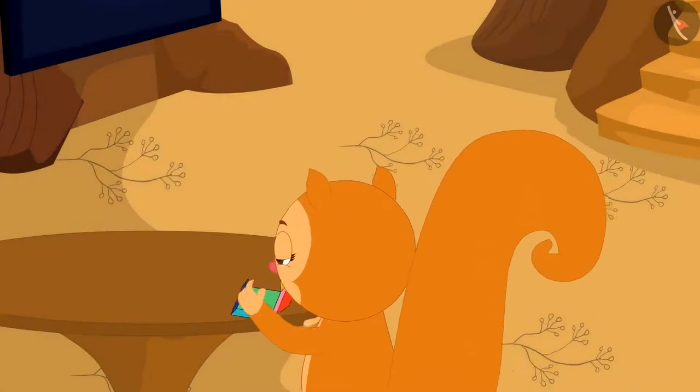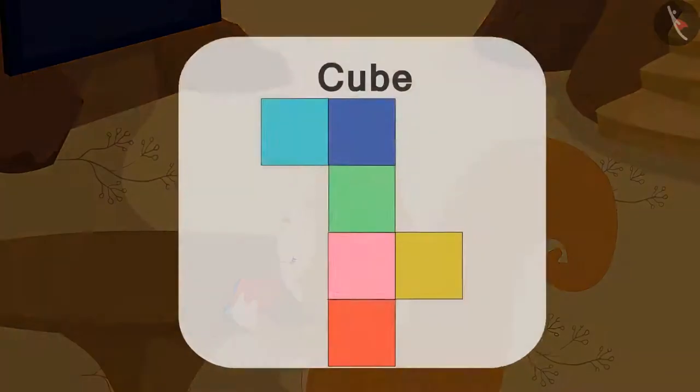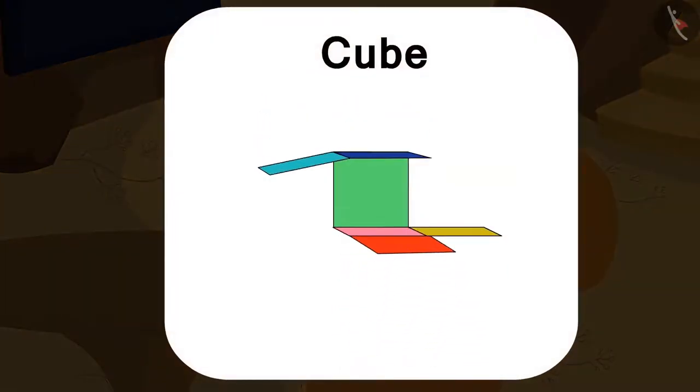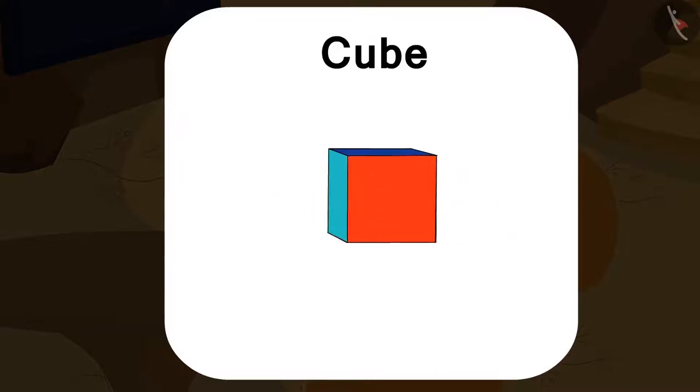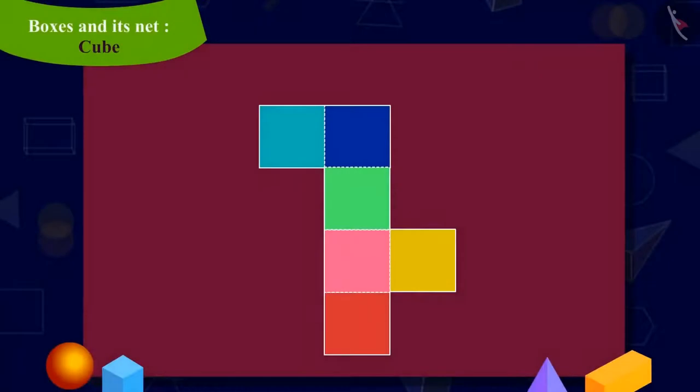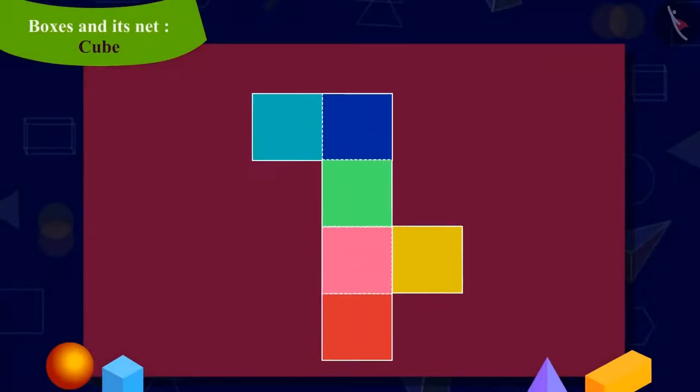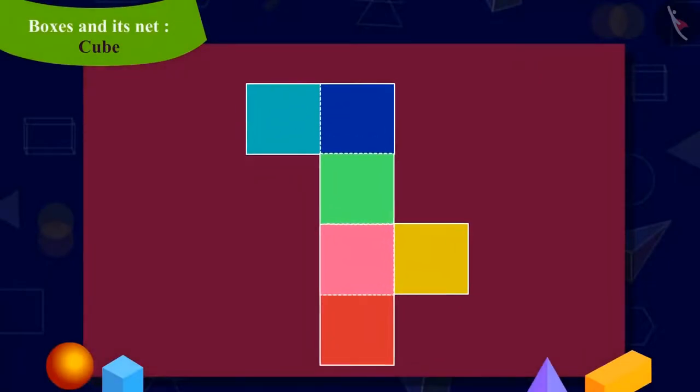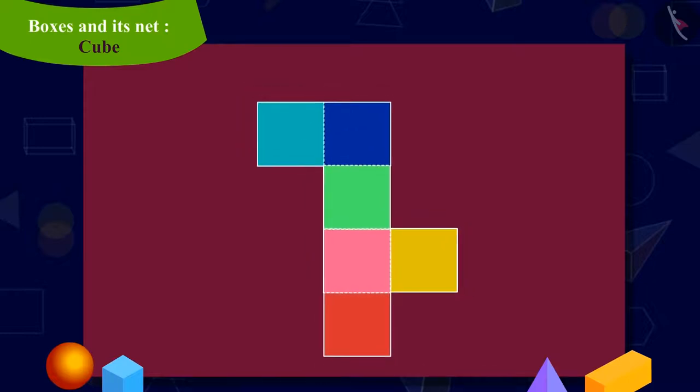Let's see if your answer is correct or not. Chanda cut out the shape and began to fold it this way. Well done, kids. Your answer is absolutely correct. This shape is the net of a cube.